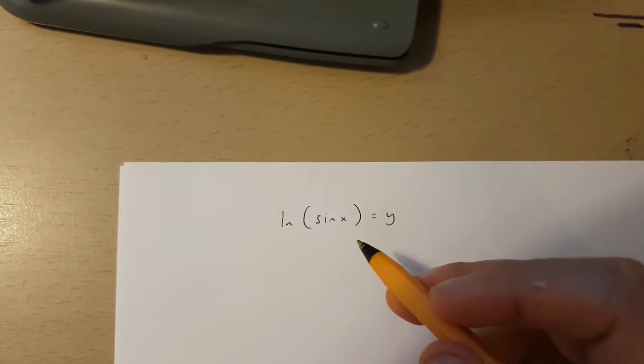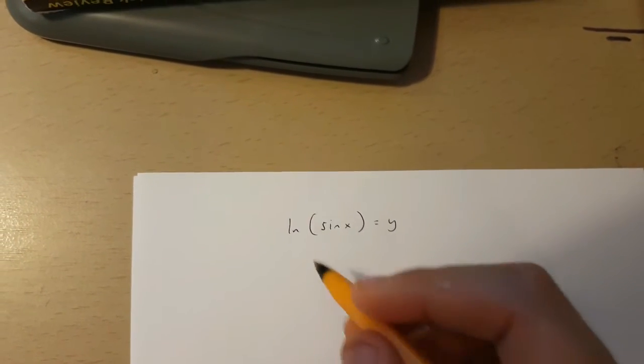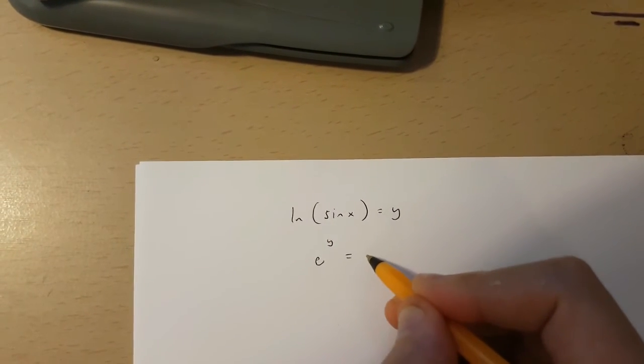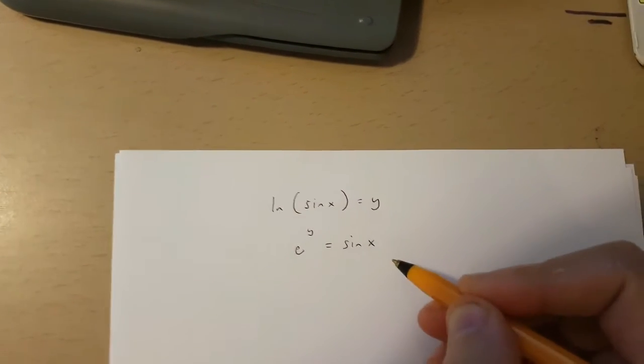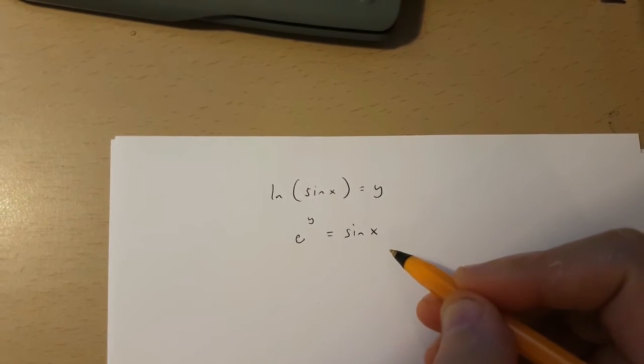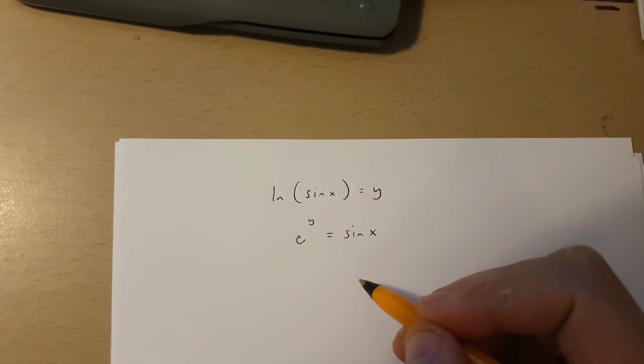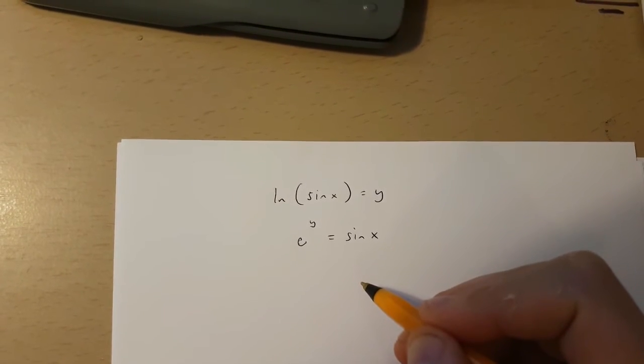Now first of all I'm going to transform this equation into e to the power of y is equal to sin x. Now because I've got this I can use implicit differentiation to get dy over dx.